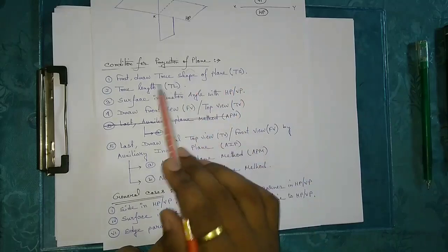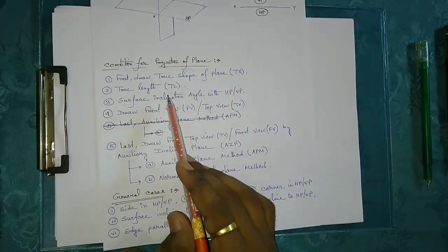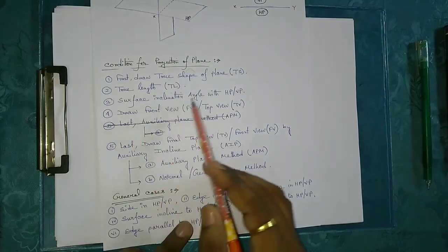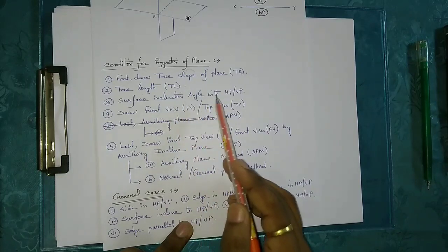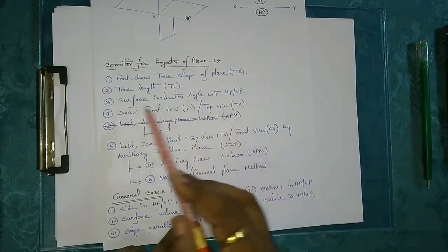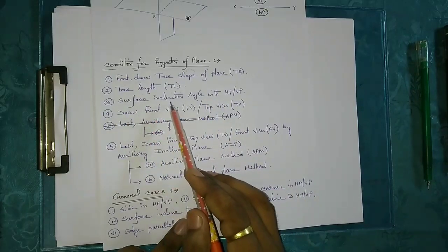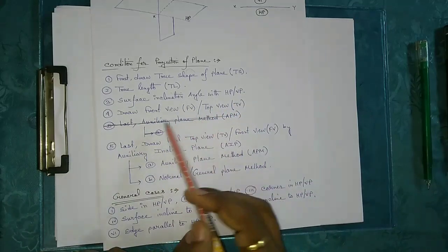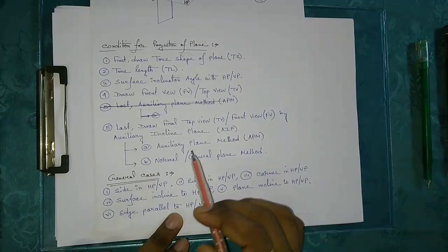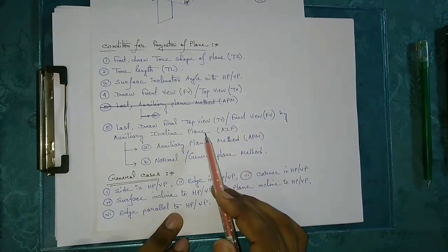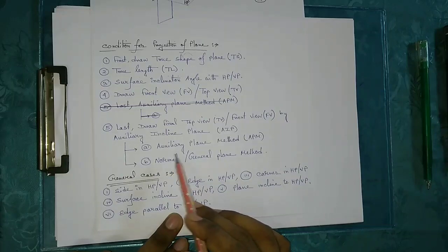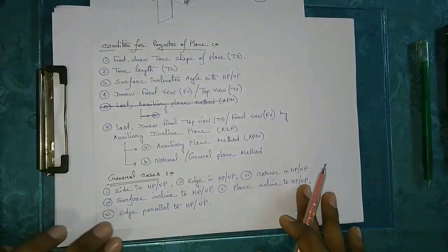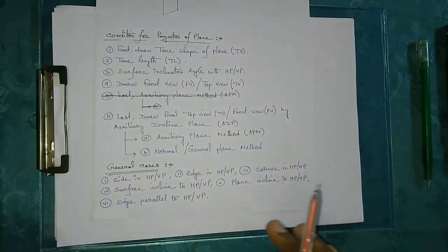First we have to draw the plane in its true shape, then draw the true length. Next we consider the surface inclination angle with HP or VP, and the plane inclination angle. The final condition is to draw the top view or front view, and then apply the auxiliary plane method or the normal general plane method.